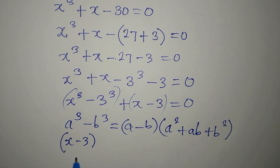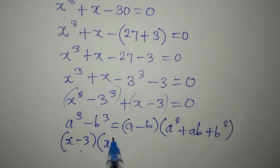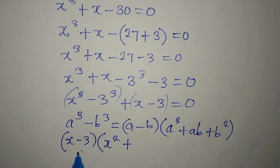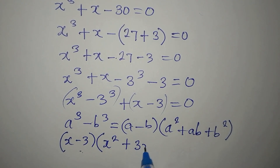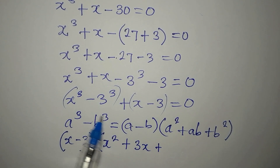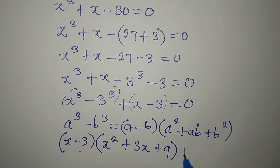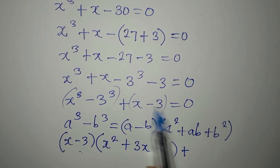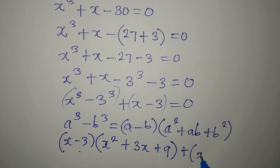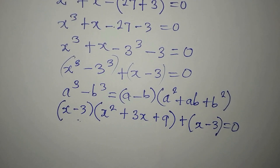In place of a - b we have x - 3. Opening the bracket: a² is x², ab is x times 3 = 3x, and b² is 3² = 9. So we get (x - 3)(x² + 3x + 9), and then plus the remaining (x - 3), all equated to 0. Do not be confused.